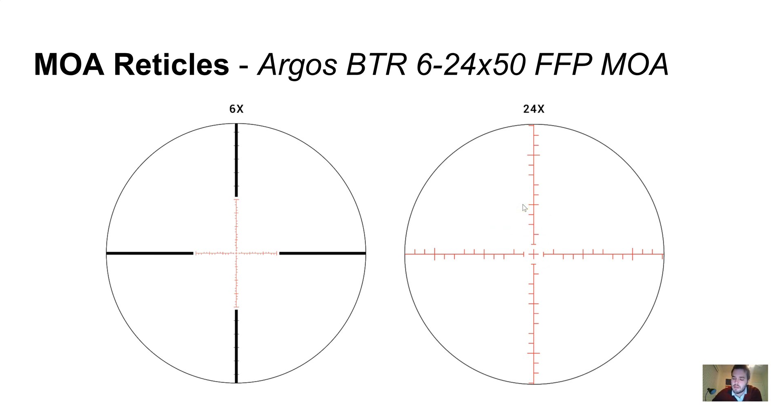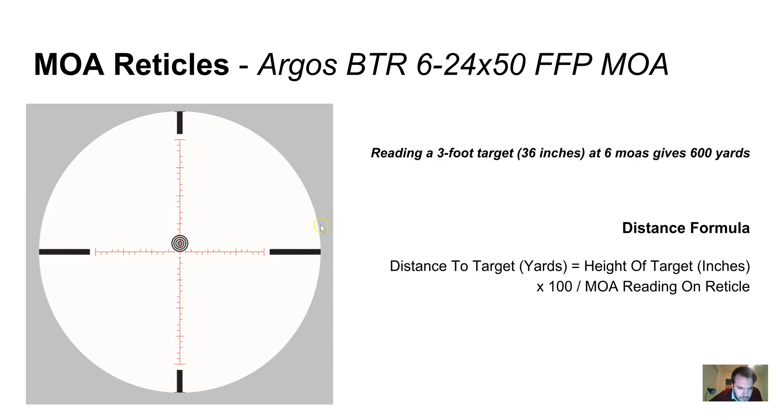Here's that same reticle. If you put the target at zero and go up one hash mark, two hash marks, three hash marks—each hash mark is two MOA, so that's six MOA total. If we know the target is a three-foot or 36-inch target, we can calculate: 36 inches times 100 divided by 6 MOA equals 600 yards. So we now know there's 600 yards to the target.